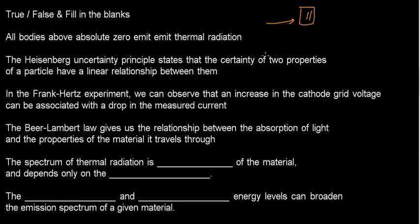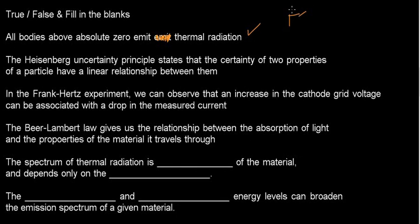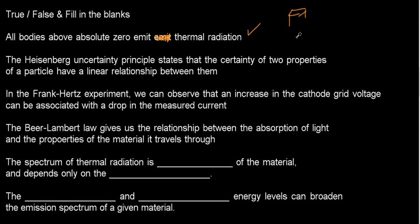True or false: all bodies above absolute zero emit thermal radiation. This is correct right off the bat. The whole idea of thermal radiation is that any body, any type of material above minus 273.15 Celsius — above absolute zero — is going to emit thermal radiation, even you and me right now. So this is TRUE.